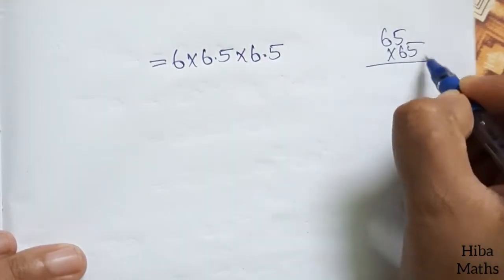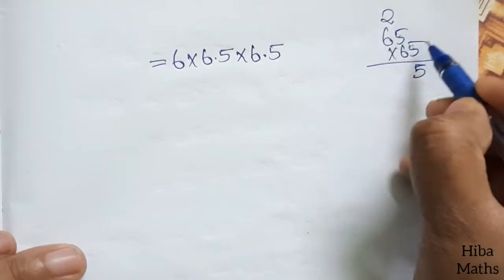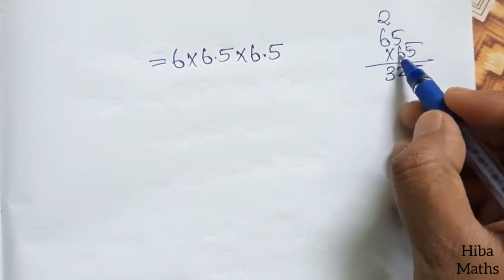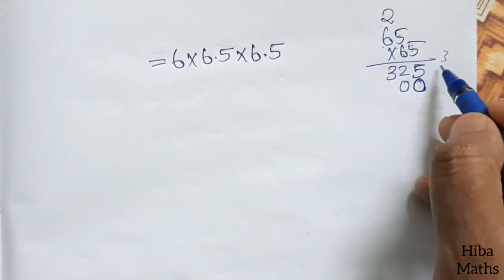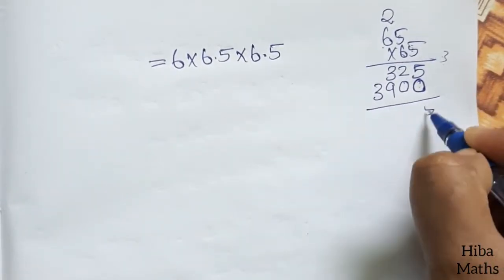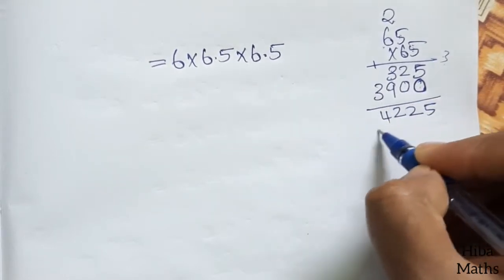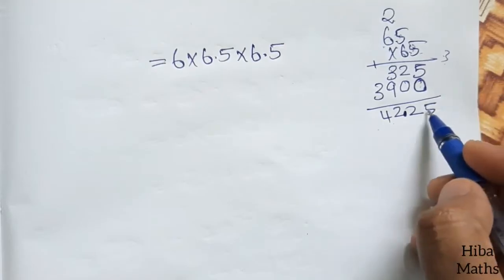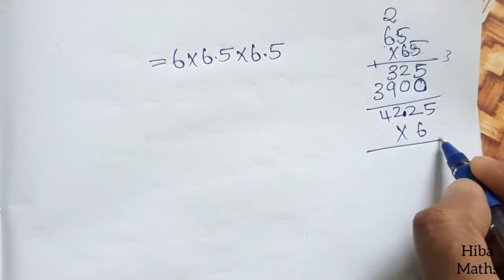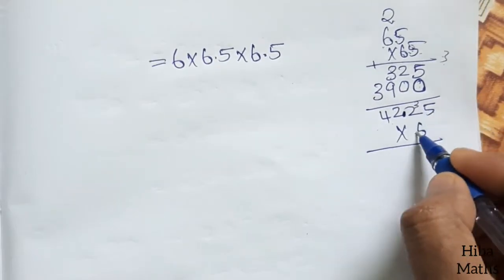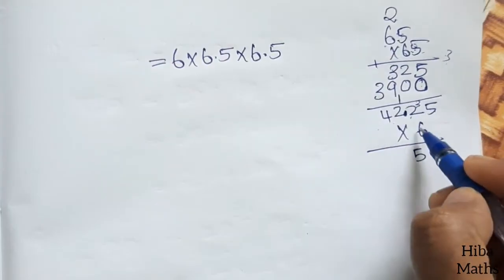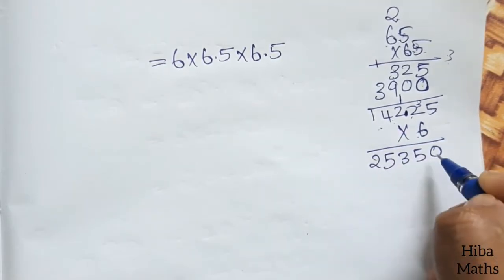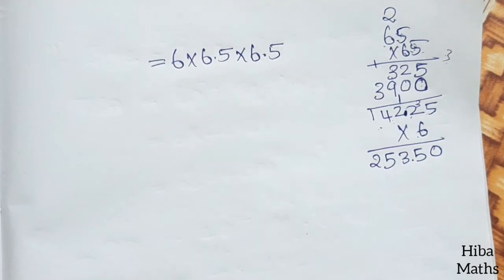Calculating 65 times 65: 5 times 5 is 25, balance 2. 6 times 5 is 30, plus 2 is 32. 5 times 6 is 30, balance 3. 6 times 6 is 36, plus 3 is 39. This gives 4225. Adjusting for decimal points: 6 times 6.5 times 6.5 equals 253.5.